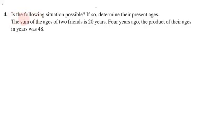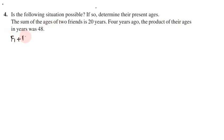Problem number four: is the following situation possible? If so, determine their present ages. The sum of the ages of two friends is 20 years, and four years ago the product of their ages was 48. We need to determine if this is possible.